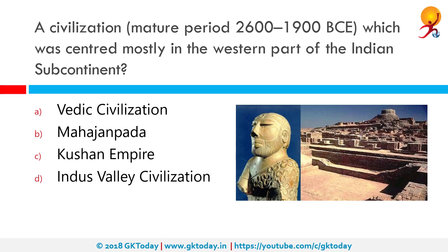A civilization from the mature period 2600 to 1900 BCE, which was centered mostly in the western part of the Indian subcontinent, is the Indus Valley Civilization. The Indus Valley Civilization, or Harappan Civilization, was a Bronze Age civilization mainly in the northwestern region of the Indian subcontinent. Along with ancient Egypt and Mesopotamia, it is one of the three early cradles of civilizations of the old world, and of the three, the most widespread.